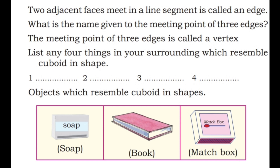List any four things in your surroundings which resemble a cuboid in shape. Objects which resemble a cuboid in shape: soap, book, matchbox, lunch box, your geometry box — these are examples.